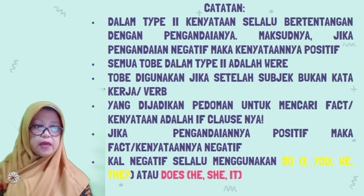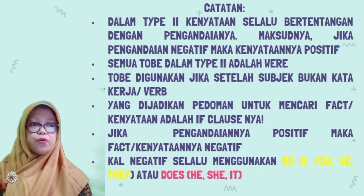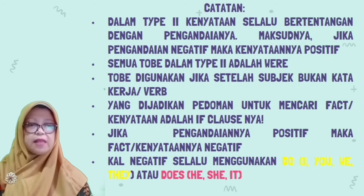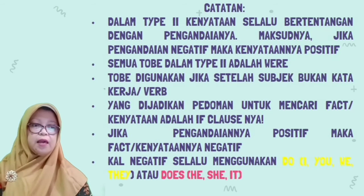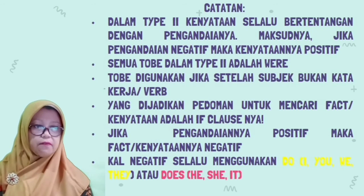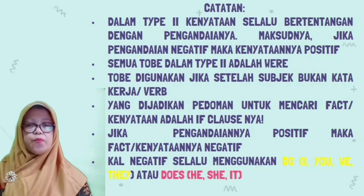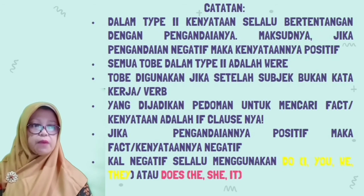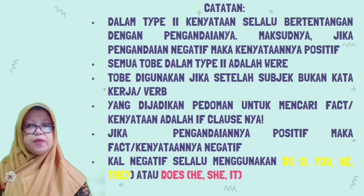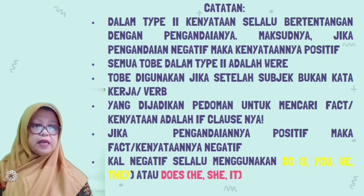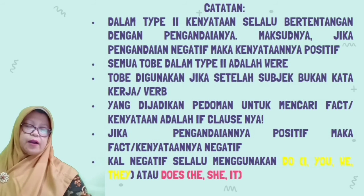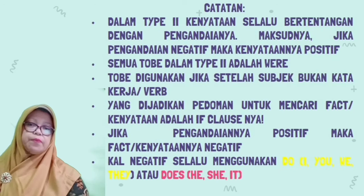Catatan berikutnya: yang dijadikan pedoman untuk mencari kenyataan adalah if clause atau kalimat pengandaiannya. Jika pengandaian positif, maka kenyataannya negatif. Kalimat negatif selalu menggunakan 'do not' untuk subject I, you, we, they, atau 'does not' untuk subject he, she, dan it. Itulah conditional sentence atau kalimat pengandaian tipe yang kedua.